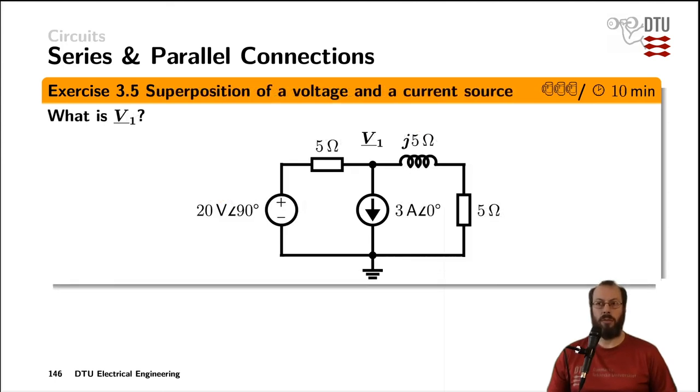In exercise five, we add the superposition of two sources to the picture. The question is: what is the voltage V₁ at that node over ground?